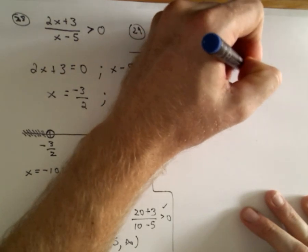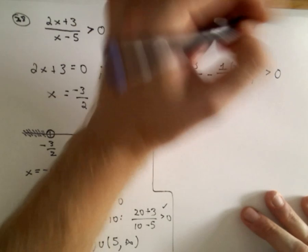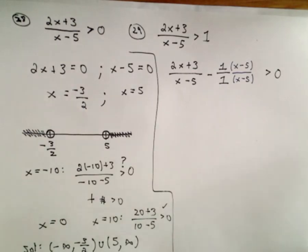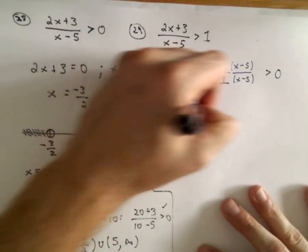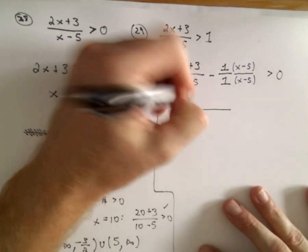So if we simplify, okay, in the numerator, we're going to have 2x minus 1x, which will just leave us with x. We'll have 3 minus negative 5, which will give us 3 plus 5 or positive 8.